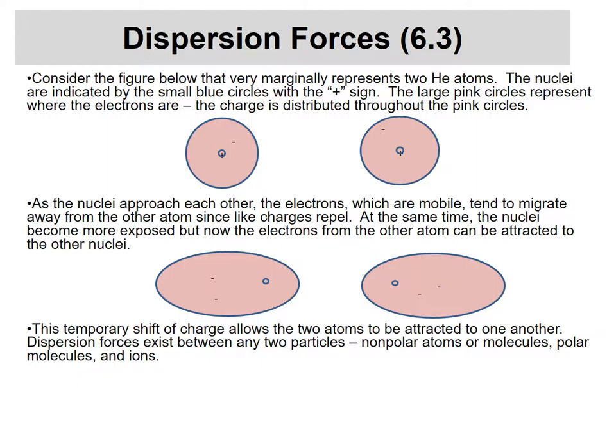The electrons are mobile — they move around. As the helium atoms approach, the electrons repel each other and shift to the other side. But once shifted, they can now see the positive nucleus of the neighboring atom and are attracted to it. This is a temporary shift — the electron cloud shifts, allowing temporary attraction between the two atoms. These are called dispersion forces, and importantly, they exist between any particles — ions, molecules, atoms, polar or nonpolar — they are universal. It's dispersion forces that bring helium atoms together at four kelvins to form a liquid.